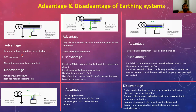Looking at advantages and disadvantages: the TT system offers low fault voltage — good for fire protection, RCD is mandatory, no continuous surveillance required. Disadvantages include partial circuit shutdown and regular RCD checking. The IT system offers very low fault current — good for fire protection and service continuity. Disadvantages: requires an IMD to detect the first fault, needs a qualified maintenance team, high fault current on second fault, and use of neutral is not advised unless the transformer neutral point is set by impedances. IT systems are generally used in medical facilities.